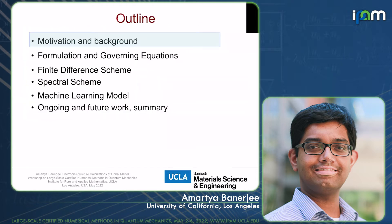Here is the outline of the talk. I'll tell you a little about chiral materials and why we care about them. Then I'll explain how to write down the governing equations of electronic structure for those materials, describe two numerical methods for solving those equations, connect it to a machine learning model, and end with a discussion of where we are heading.